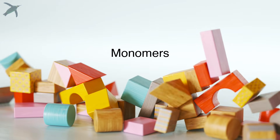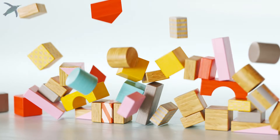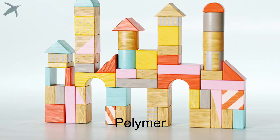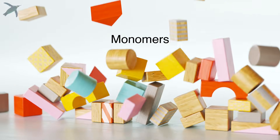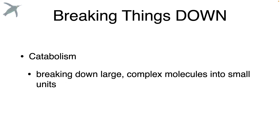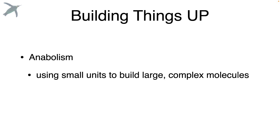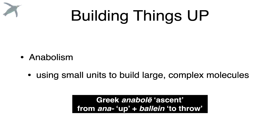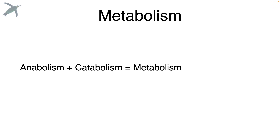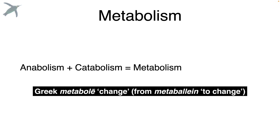These monomers, individual units, can be used to build up big complicated things that we call polymers, and polymers can be broken down into their individual monomers. But how does all this work? First let's get a handle on some of this vocabulary. Catabolism literally means to throw down — breaking down large complicated molecules into small ones. Anabolism is the reverse: using small units to build large complicated molecules. Both of these words taken together are what we refer to as metabolism, which literally just means change.